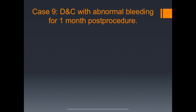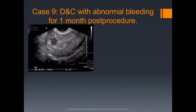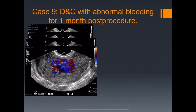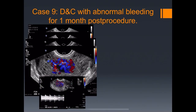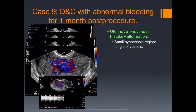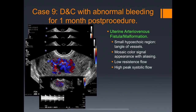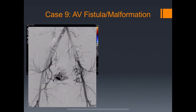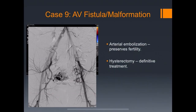DNC with abnormal bleeding for one month post-procedure: there's a hypoechoic structure not in the endometrium but within the adjacent myometrium — very hypervascular with multiple tangled vessels. The waveform shows high-velocity, low-resistance flow. This is a uterine AV fistula or malformation, presumably secondary to the procedure. Features include a small hypoechoic region with mosaic color signal and aliasing, and low resistance with high peak velocities. This must be diagnosed correctly — performing a DNC mistaking this for retained products could cause life-threatening hemorrhage. The patient was embolized, which preserves fertility, though hysterectomy is the definitive treatment.